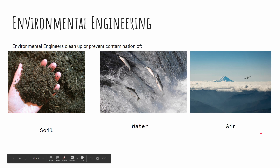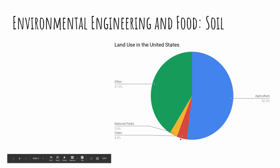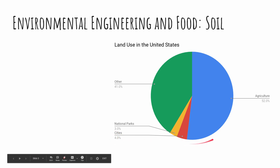Let's start off with the soil. The biggest way that food production affects land is just in how we use our land. Looking at this pie chart, we can see that in the United States we use 52% — half of all the land in the country — to grow food. In contrast, only 4% of that land is used for cities. There are other places people live, but you can still see there's a huge amount of space we give up for food production. National parks are only three percent.